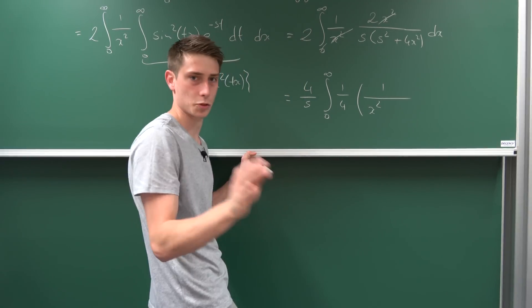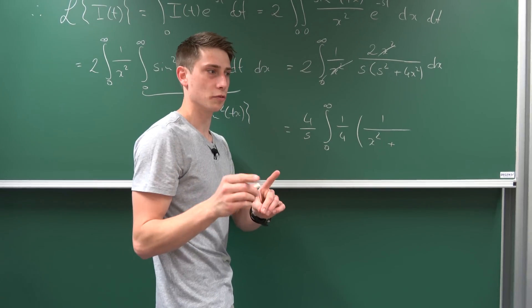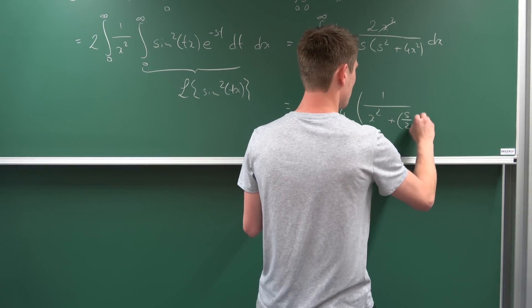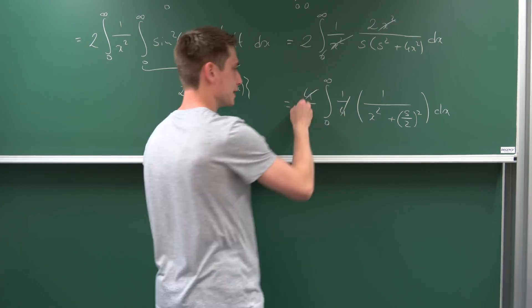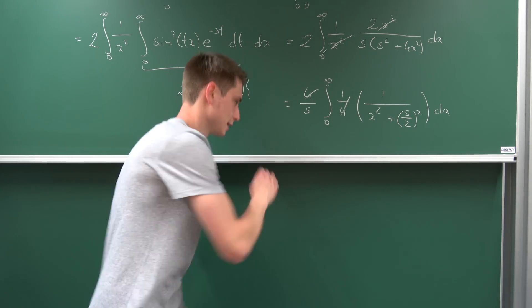This x² term - that's what we wanted - plus s²/4, which we can rewrite as (s/2)² and then the x. These cancel out and we end up with the inverse tangent.